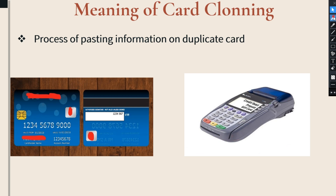Nowadays, the banks have started inserting EMV chips on ATM cards. This is the chip which is embedded on the ATM card. Recently, we get ATM cards from our banks on which both the magnetic strip as well as this particular chip are available. In order to avoid card skimming, cloning, and all these fraudulent practices, the banks have now embedded this particular chip on their ATM cards.